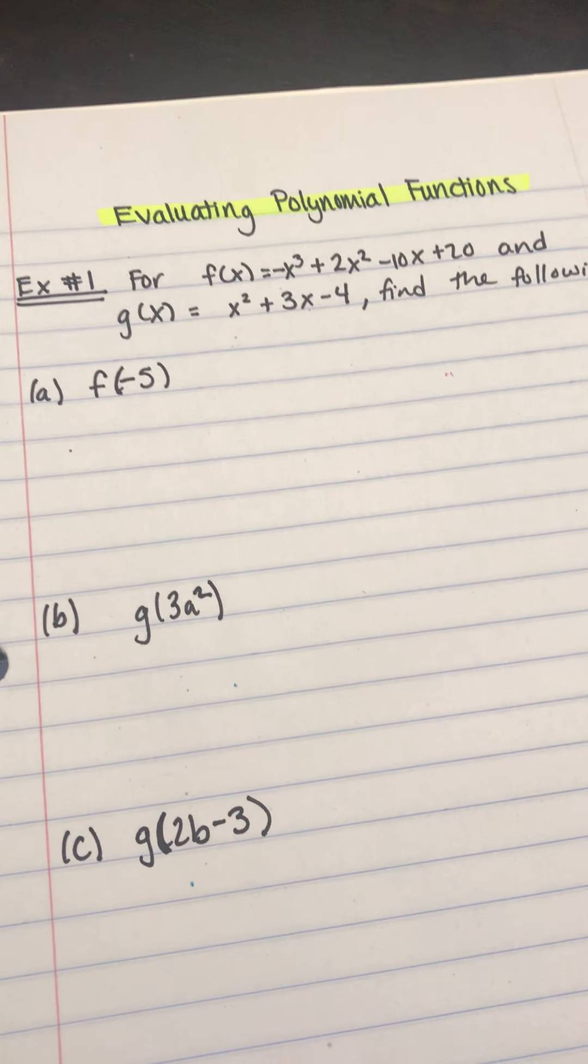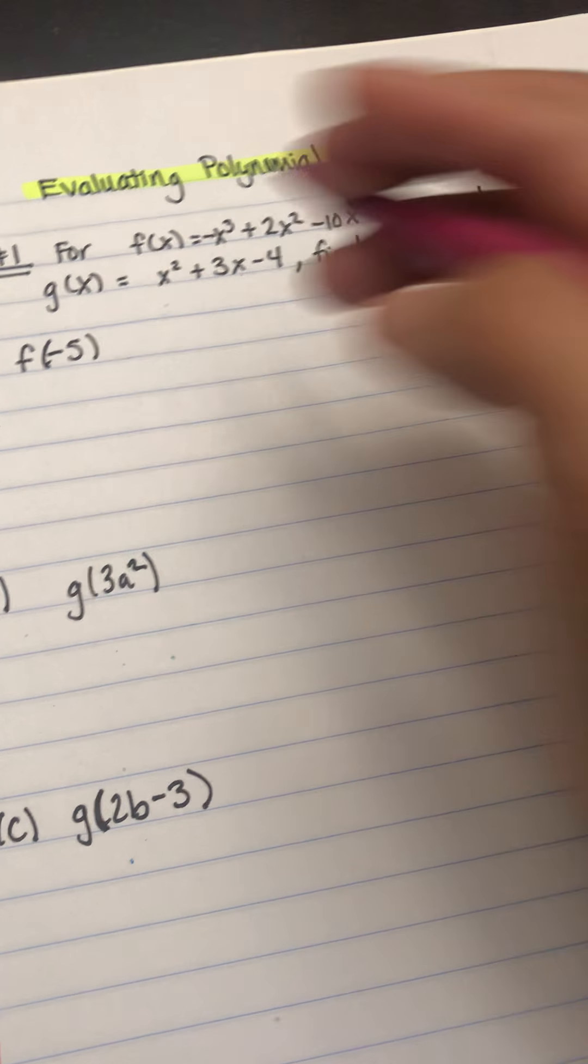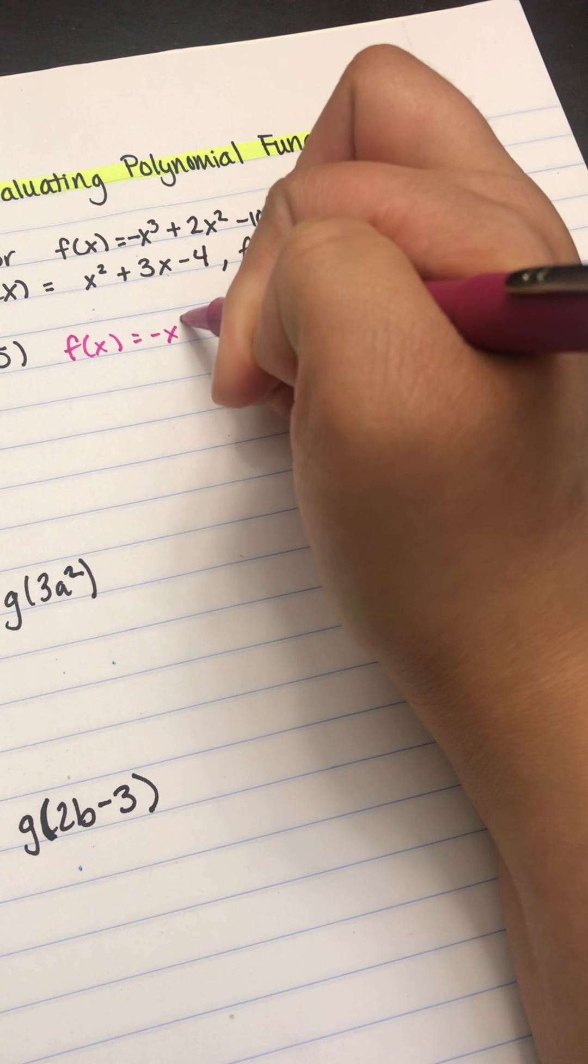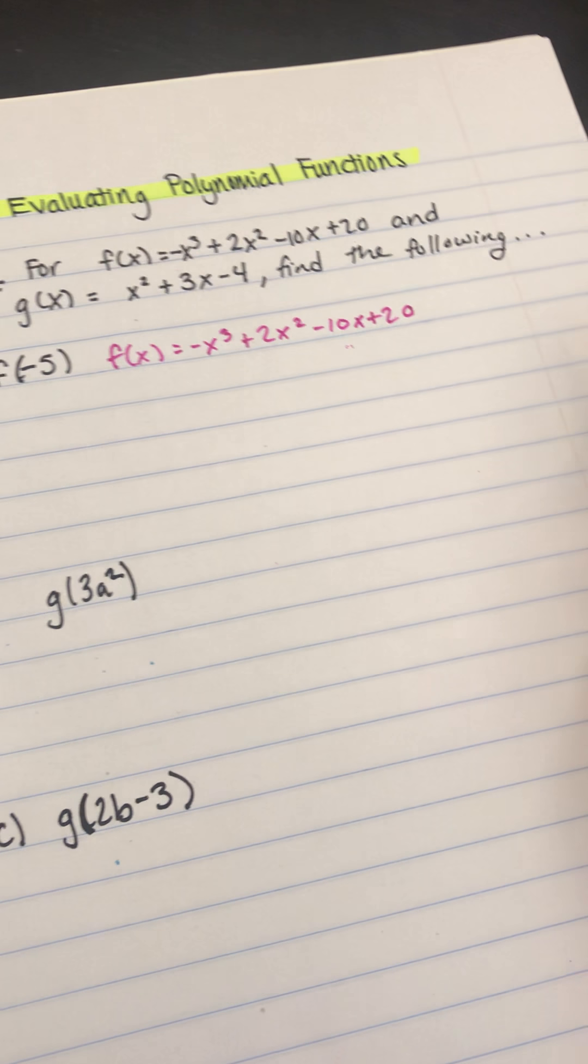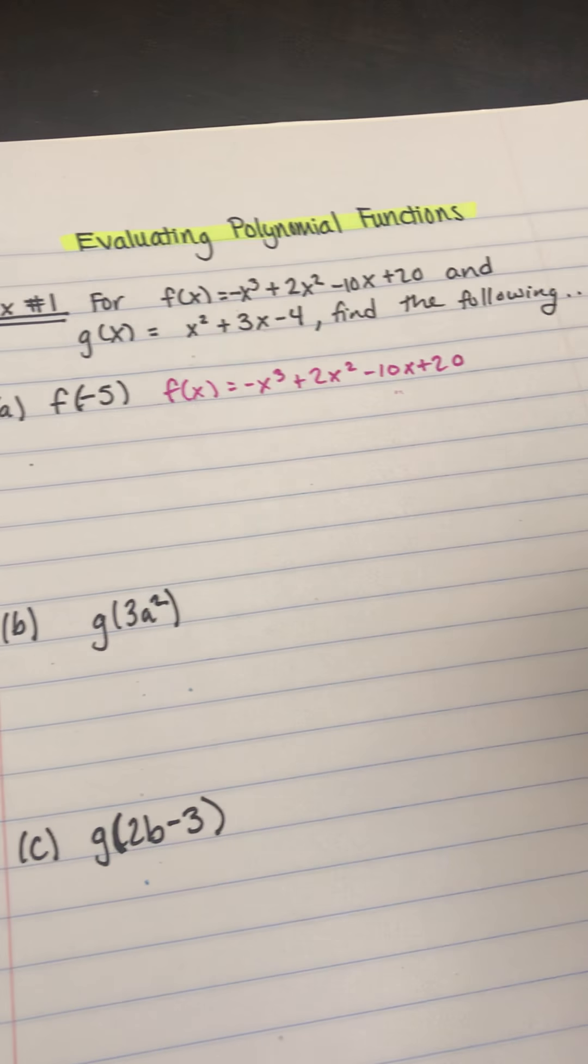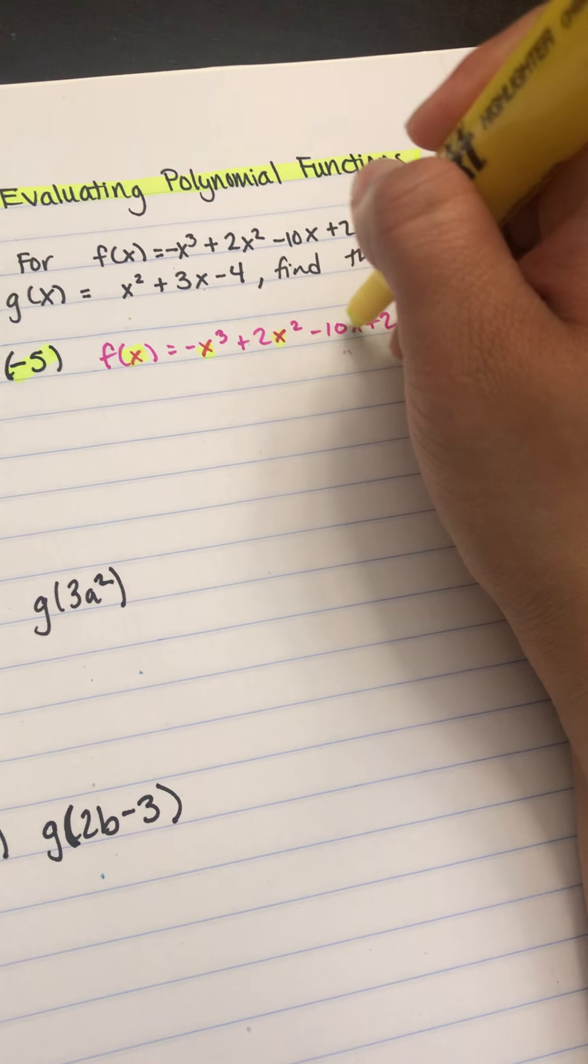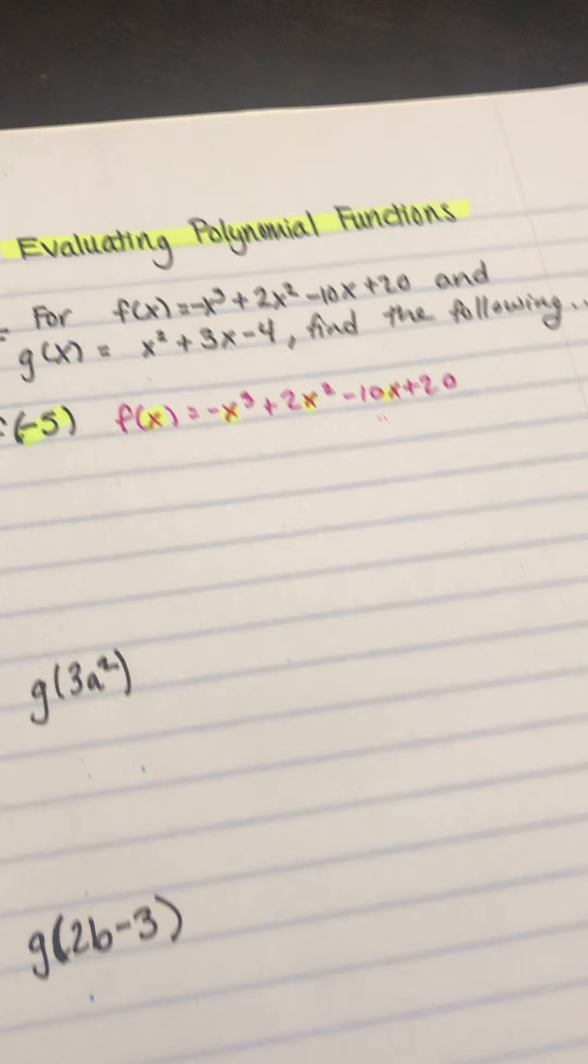So the first question here is f of negative 5. I'm going to start by writing down what f of x is. So f of x equals negative x to the third plus 2x squared minus 10x plus 20. And the negative 5 is in parentheses, so that's what we plug in everywhere we see an x. And remember, you should be using parentheses to be safe.